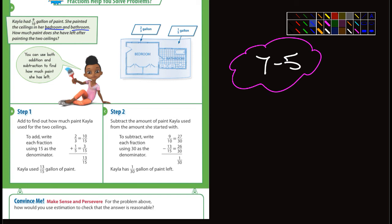If you look at the diagram here you can see that they gave us how much she used. In the bedroom two-thirds of a gallon and in the bathroom one-fifth of a gallon. So we need to figure out how much paint she used. You got to add two-thirds and one-fifth and see what you get.